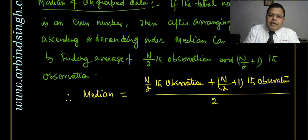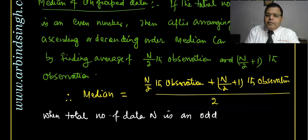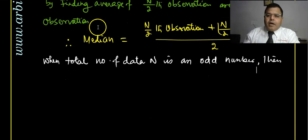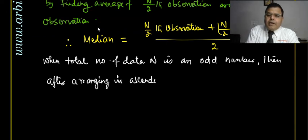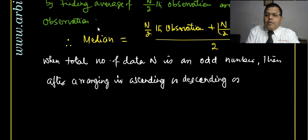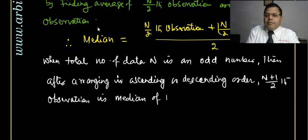When the total number of data n is an odd number, then after arranging the data in ascending or descending order, the median is the (n+1)/2 th observation.